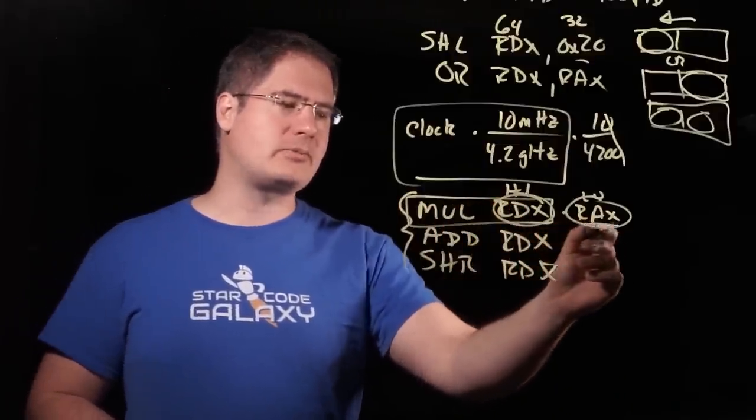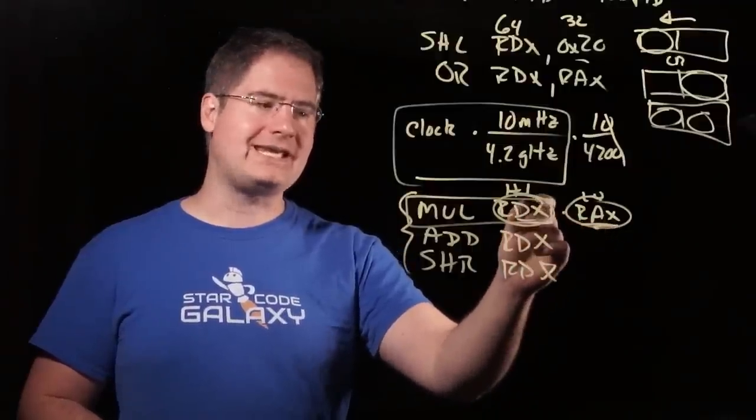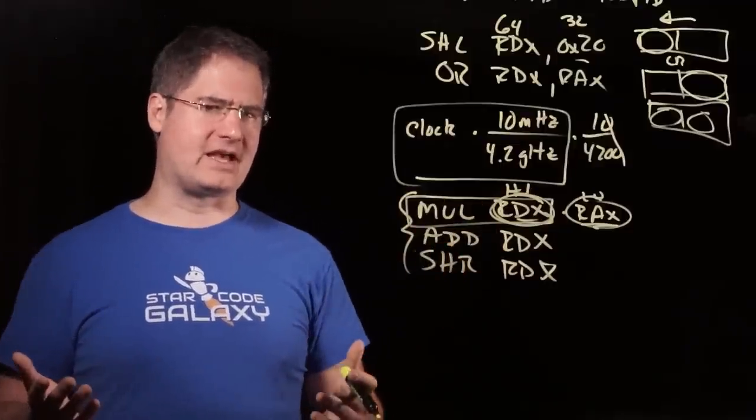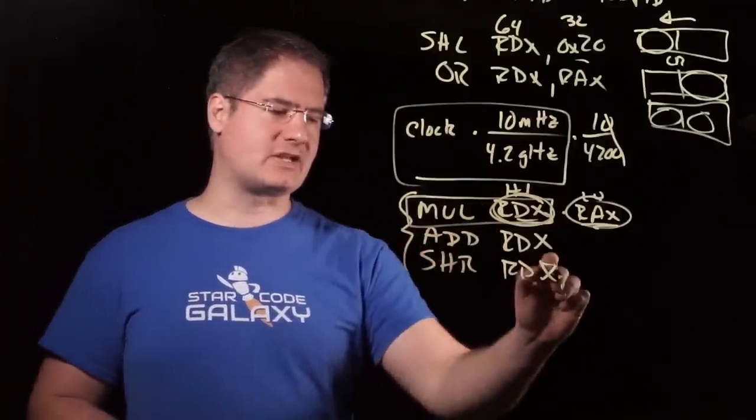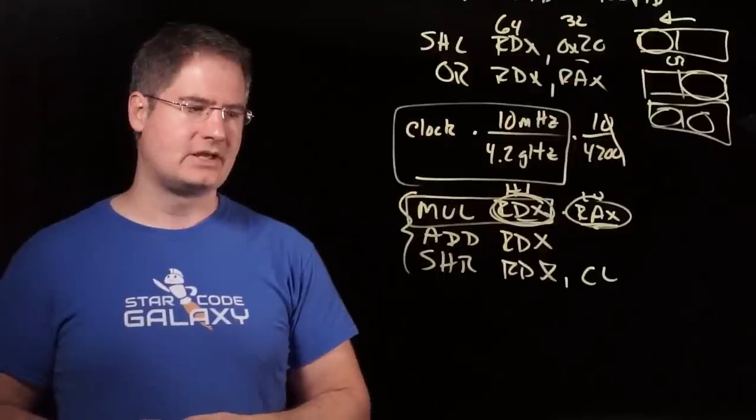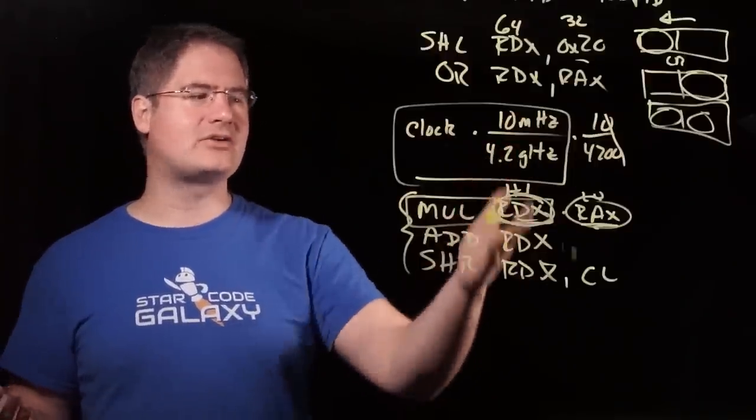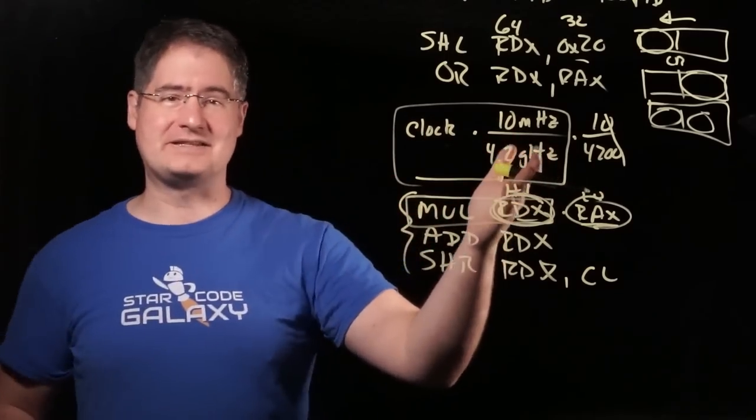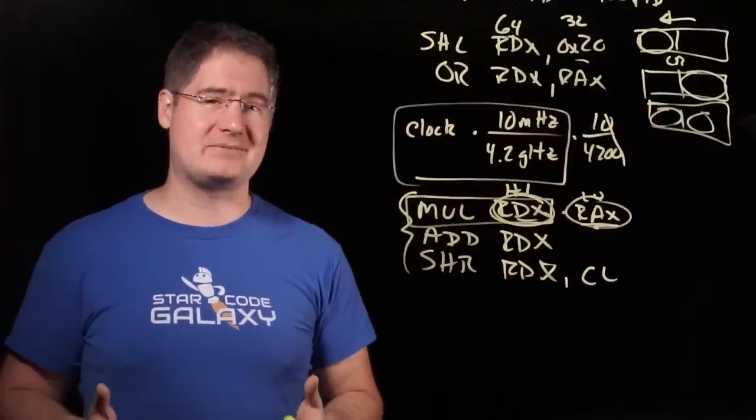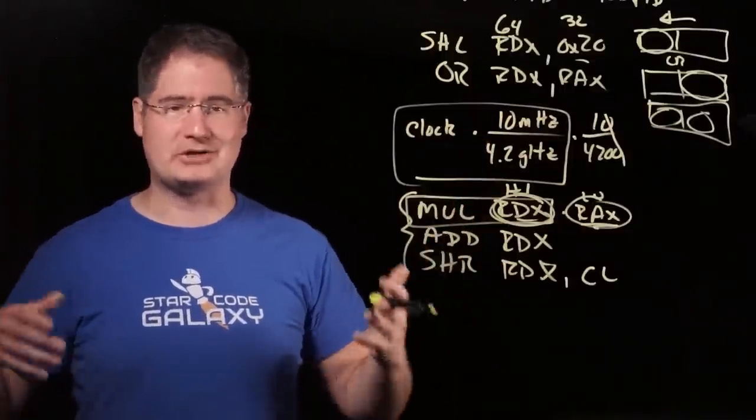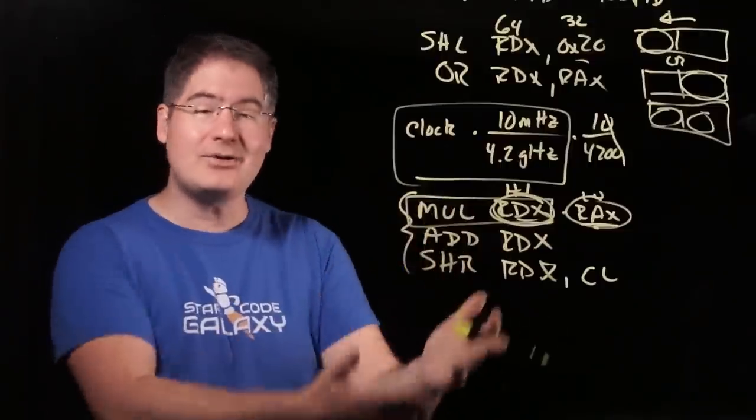So, what we're seeing here is we're multiplying 64 by 64, keeping the high, adding something to the high, and then shifting the high, right? We shift it by CL, which we loaded. What is this doing? How could that possibly be computing this? We know it's computing this because we know it's giving us back a 10 megahertz timer, and we know the source is some gigahertz timer, 4.2, something like that. How is that doing this?